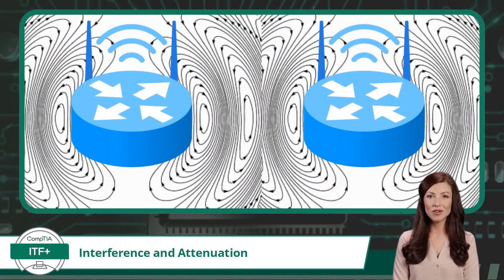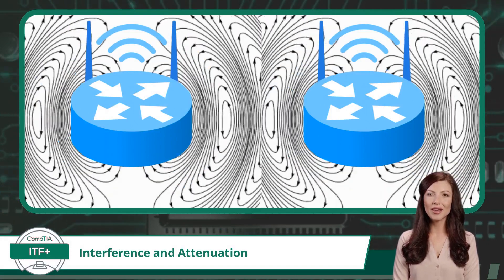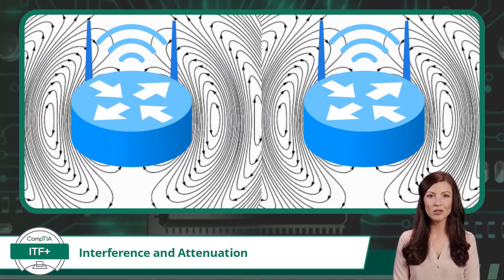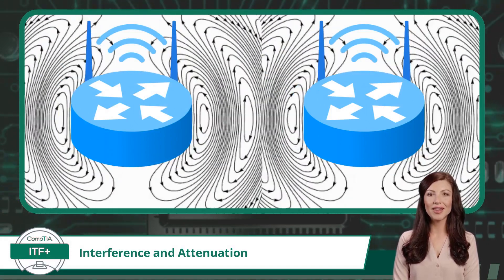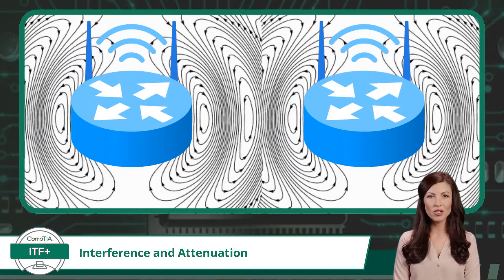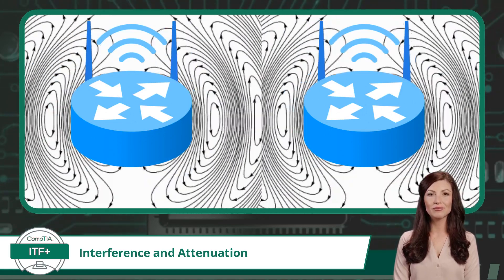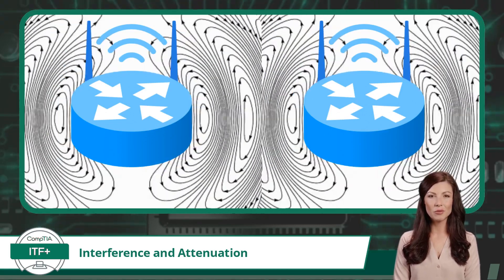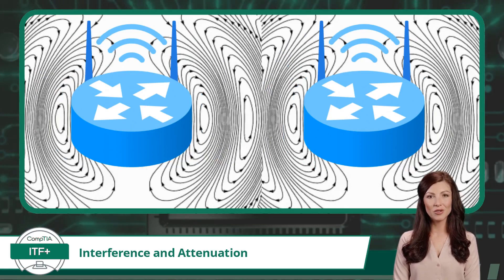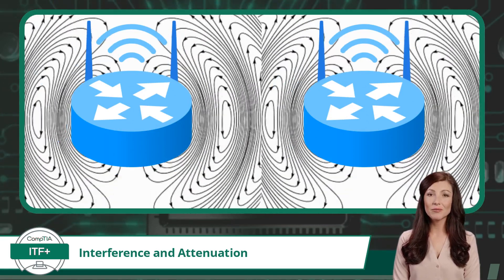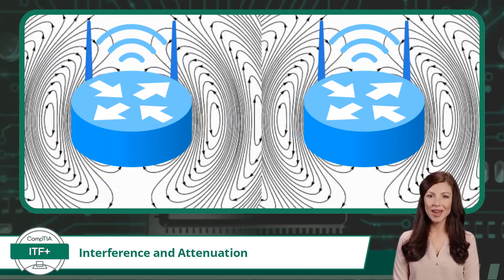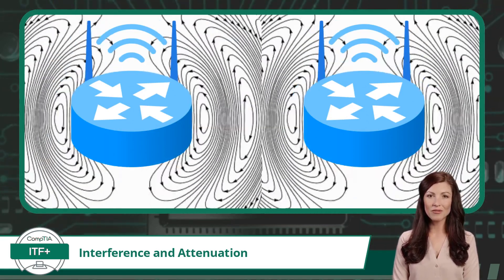Electromagnetic interference happens when electromagnetic waves from one electronic device interfere with the signals or operations of another nearby electronic device. These waves can be produced by various sources such as Wi-Fi signals, cell phones, power lines, and even microwave ovens.